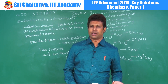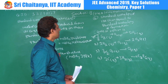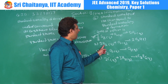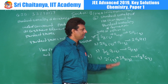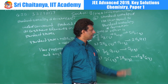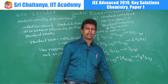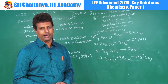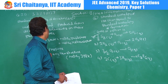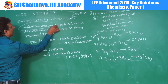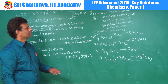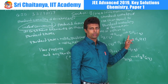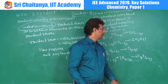Option 2 involves H2 and O2 reacting to give water. H2 and O2 are in standard states and water liquid is the standard state — but 2 moles of water are obtained, not 1 mole. The standard enthalpy of formation requires exactly 1 mole of product. So option 2 is wrong.